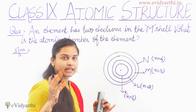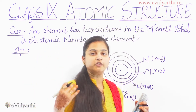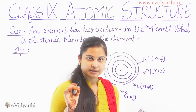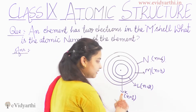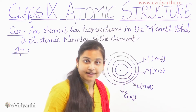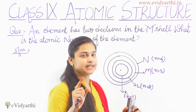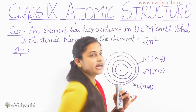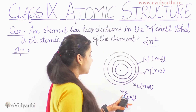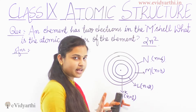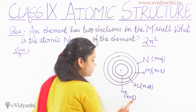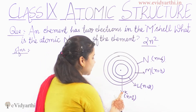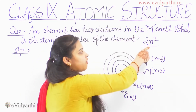In one shell, the maximum number of electrons that can be accommodated can be found from a small formula. The maximum number of electrons a particular energy shell can hold is given by the formula 2N², where N is the energy number or shell number. So if it is the K-shell, K's energy shell number N is equal to 1.